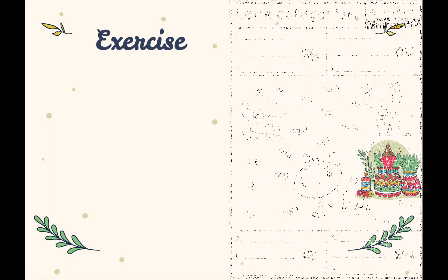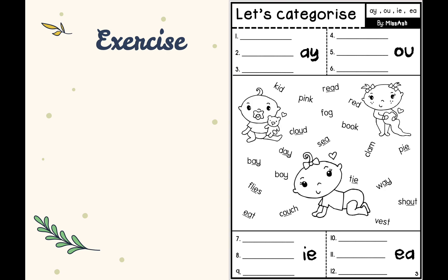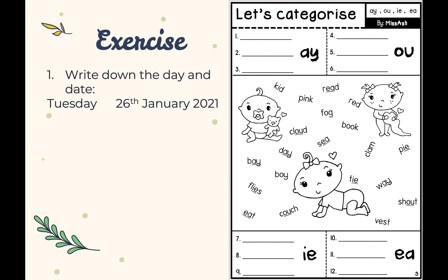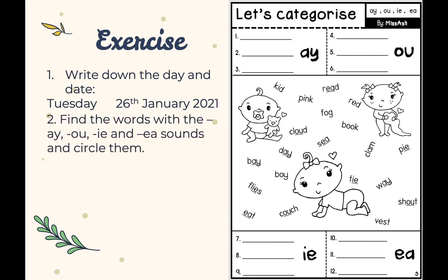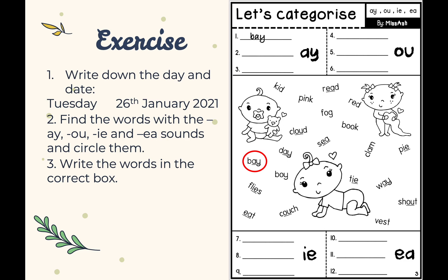Your exercise for today is page 3 of the year 2 phonics module. First, write down the day and date. Today is Tuesday, the 26th of January 2021. Next, find the words with the A, ow, I and ee sounds and circle them. For example, bay. Then, write the words in the correct box. So bay would go into the first box. And finally, take a picture of your work and hand it in to your teacher.